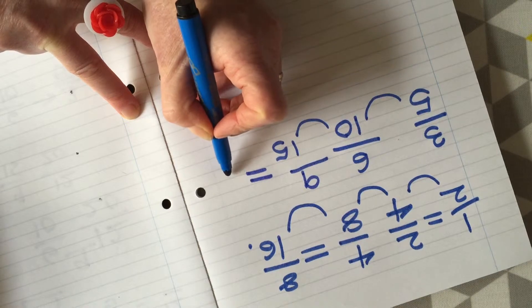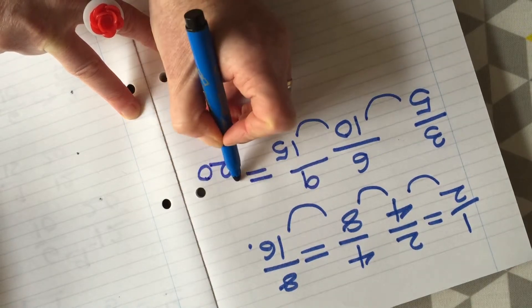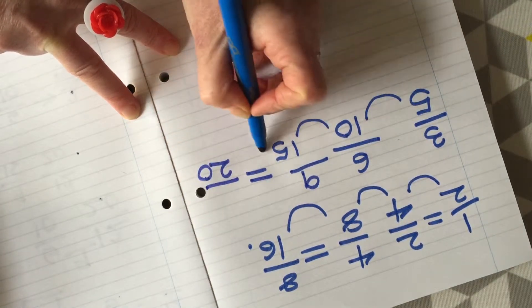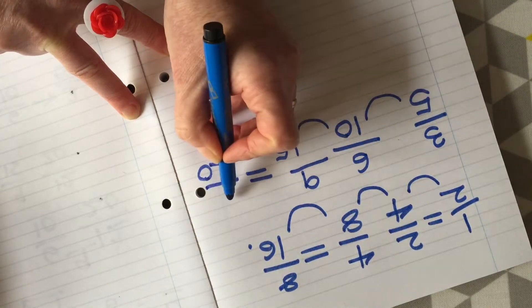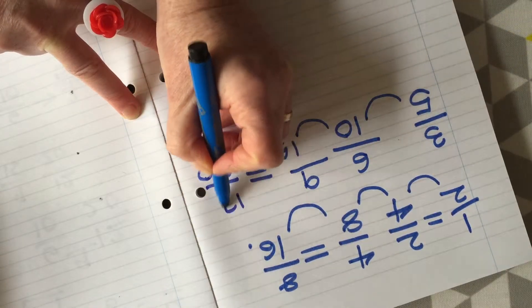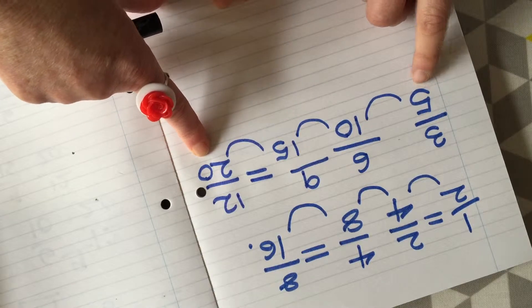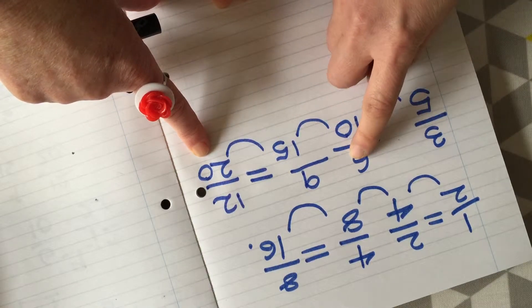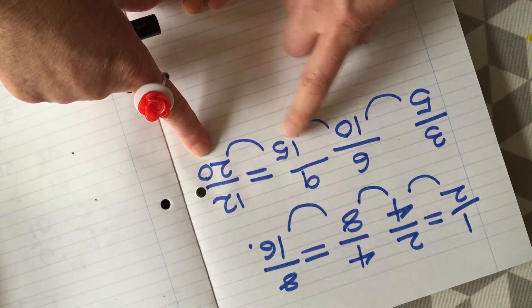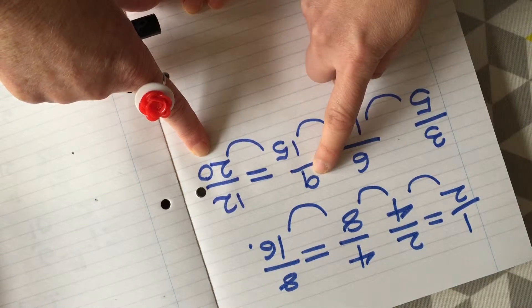And then twenty here: five, ten, fifteen, twenty. So what sits above here? We've got the relationship: five times two is ten, three times two is six; five times three is fifteen, three times three is nine; five times four is twenty, three times four is twelve.